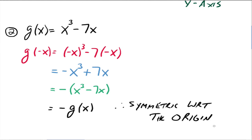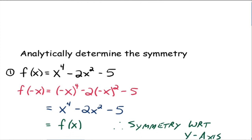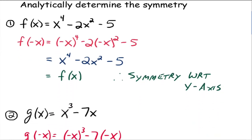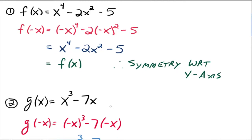If you can't get g of negative x to equal g of x, or can't get g of negative x to equal the negative of your original function, then your function is not symmetric with respect to the y-axis or the origin. Some functions have symmetry with respect to the y-axis, some with respect to the origin. I would not latch on to the idea that even exponents always mean y-axis symmetry and odd exponents always mean origin symmetry — that's not always the case. Just plug negative x into your function, do the math, and let it tell you what symmetry you have.